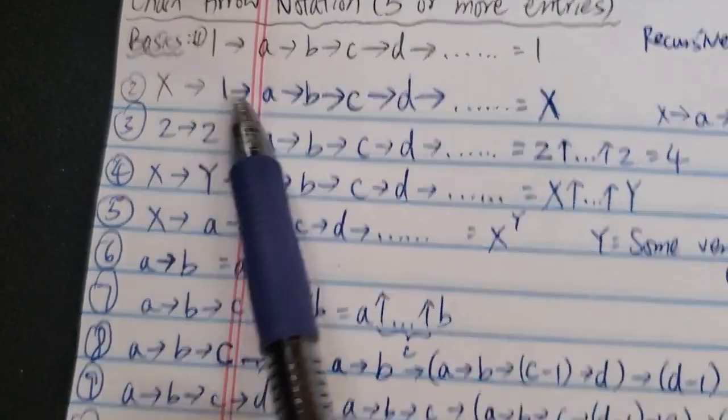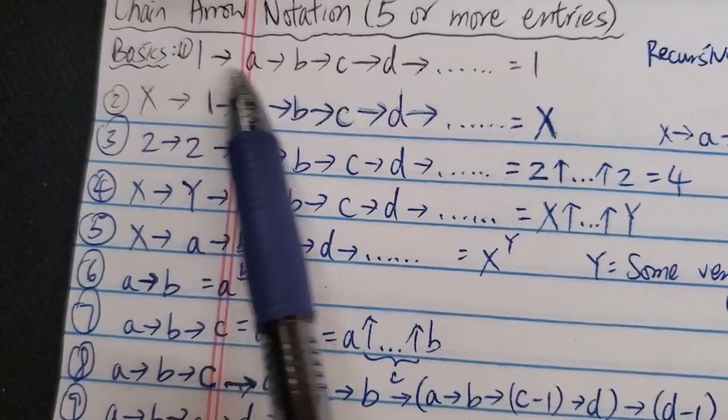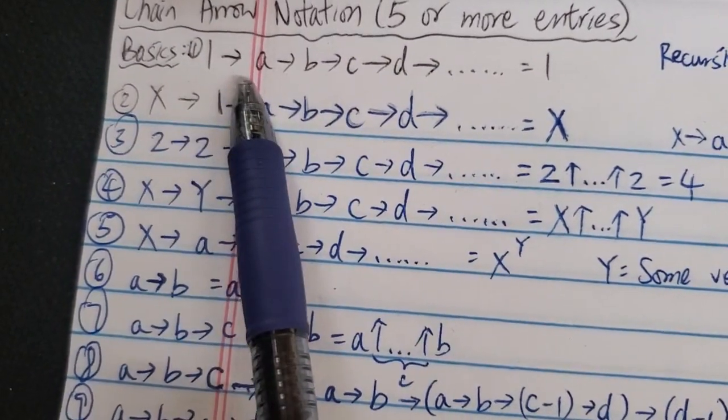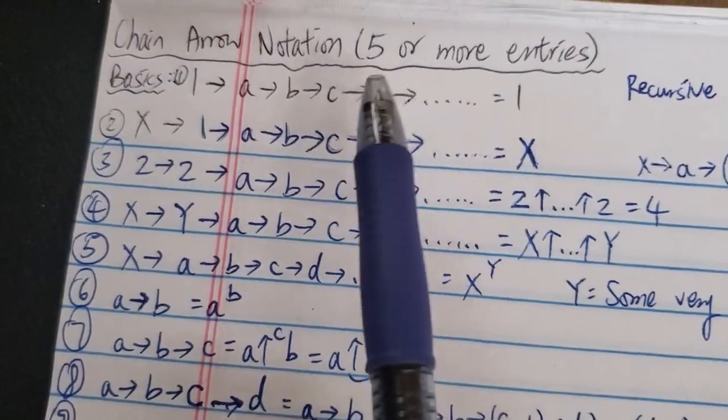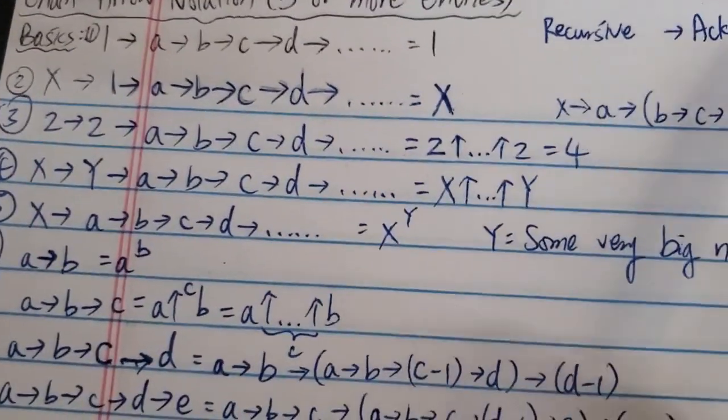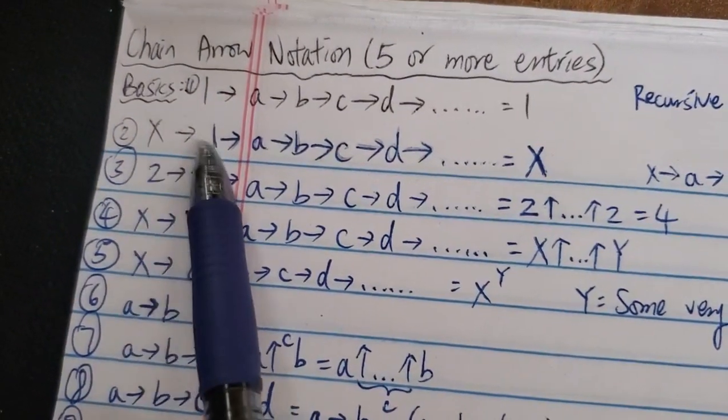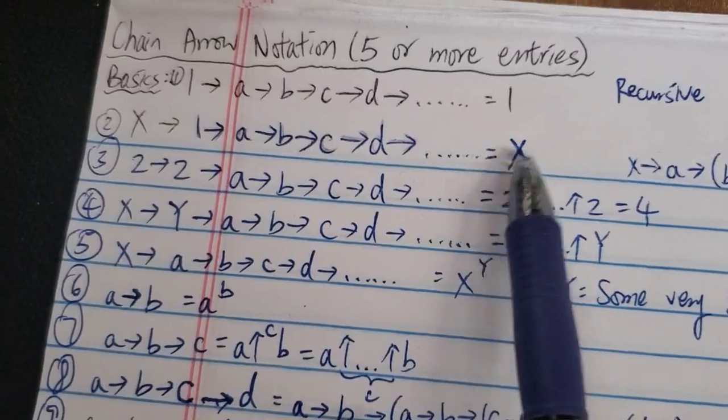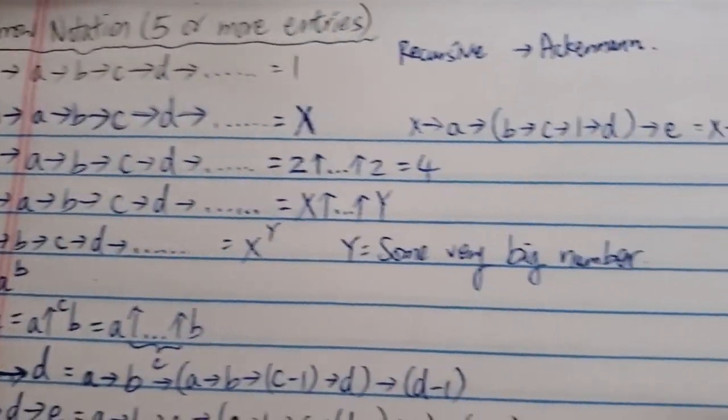So anyway, first of all, there are some rules I've written down here. So basically, if the chain is like 1→a→..., it's just equal to 1. So everything after one is ignored, but there's some exceptions I'm going to show you. The second rule: if it's X→1→..., then of course it's just equal to X, because anything after one is cancelled.